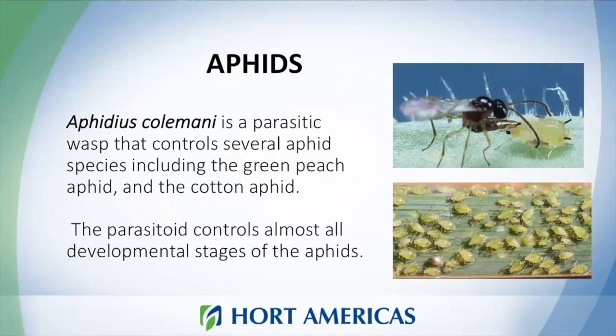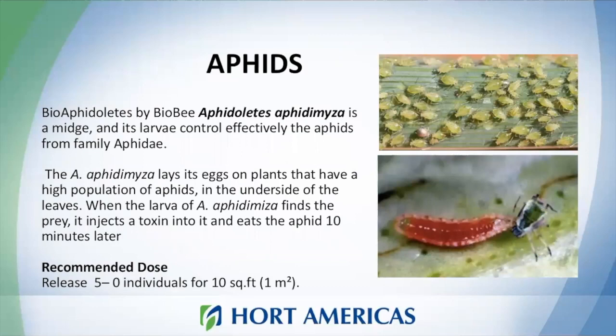How can we control these pests? We have Aphidius colemani, which is a parasitic wasp that controls several aphid species and can be used to control almost all development stages of aphids. We also have another option in Biobee, which is Aphidoletes — this is a mite that can also effectively control aphids from the family Aphididae.